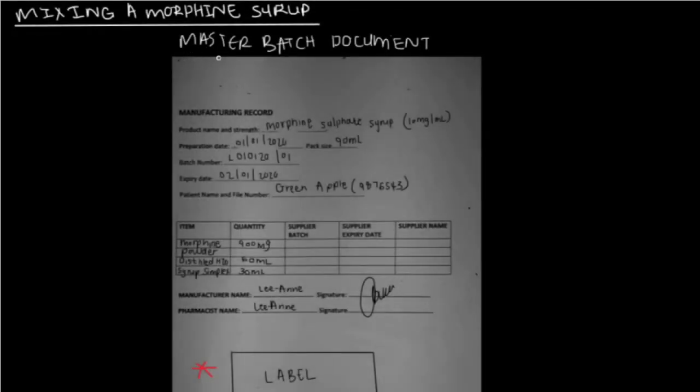On the master batch document, before you start with the mixture, you will be able to write the product name, the preparation date, batch size, batch number, expiry date, patient name, file number. And also, the items you're going to use and the quantity of what you're going to use. You'll be able to write the person who's going to manufacture, the person who's going to be the pharmacist supervising. Or, you can be both if you're the pharmacist, and then paste your label. So, all the documentation is done. Now, you can simply go to your compounding area and start with your compounding.